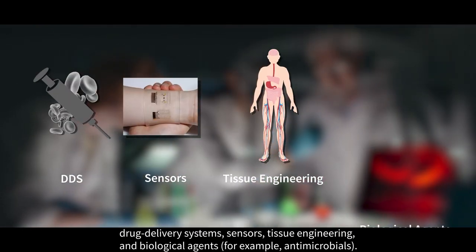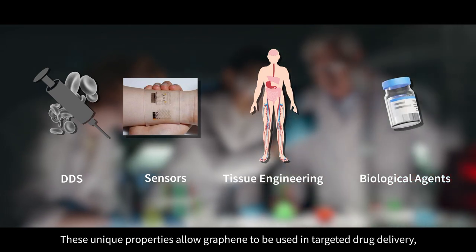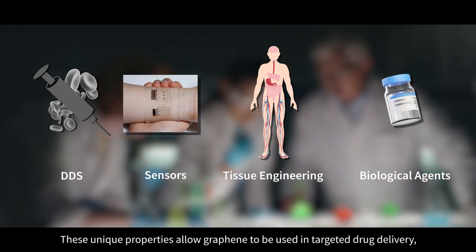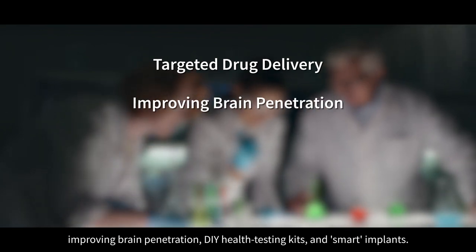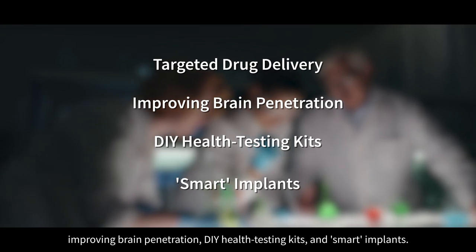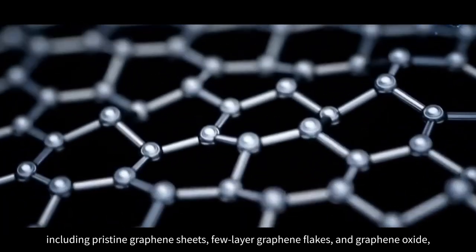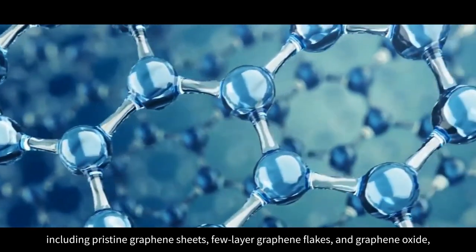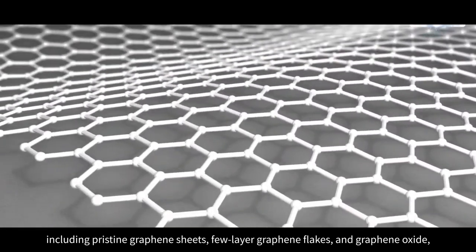In biomedicine, graphene has multiple uses and they can be classified into several main areas: drug delivery systems, sensors, tissue engineering, and biological agents. These unique properties allow graphene to be used in targeted drug delivery, improving brain penetration, DIY health testing kits, and smart implants.